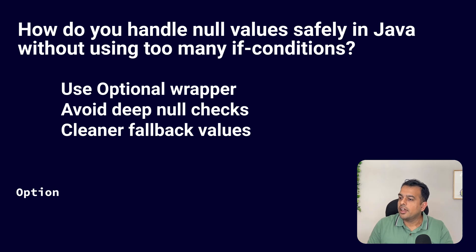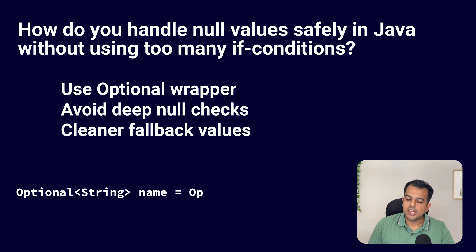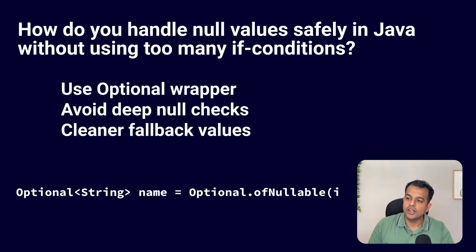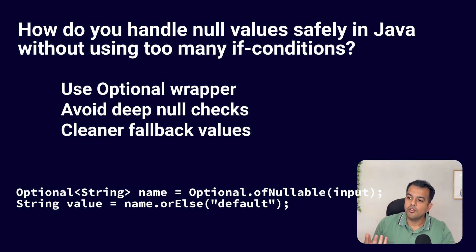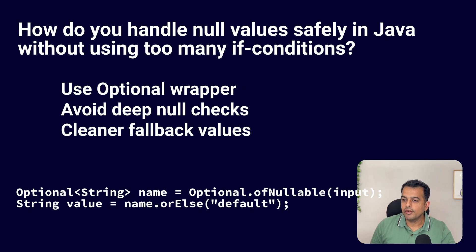On the screen there is an example of using Optional. In this example, we have created an Optional object holding a String value. This Optional object works like a container — it can hold null as well. By using the orElse method, we can define that if the value is null, we will pass a default value instead.